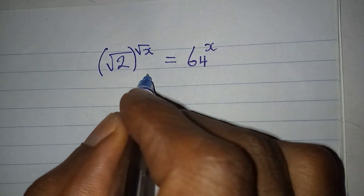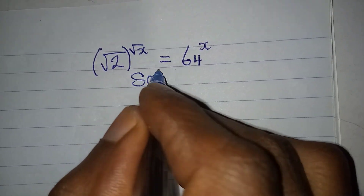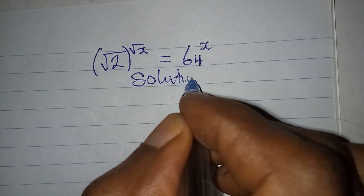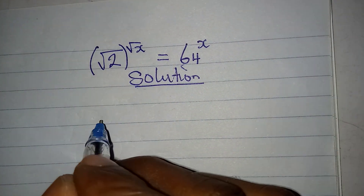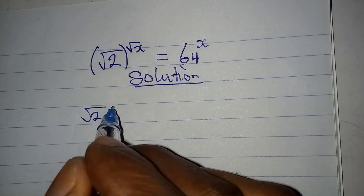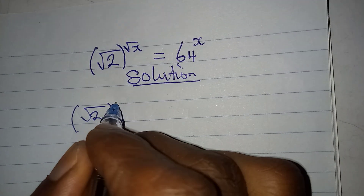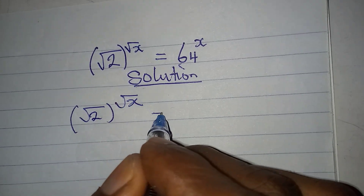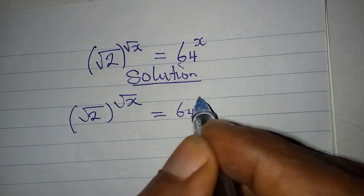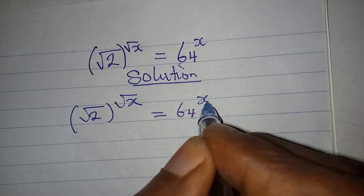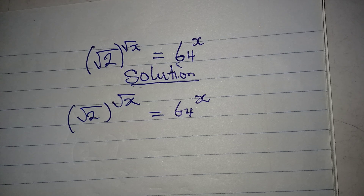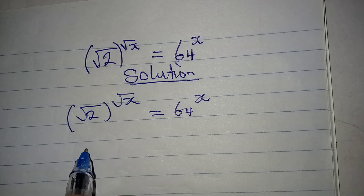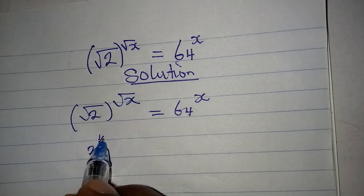Let's solve this problem quickly. We have the square root of 2 to the power of square root of x, equal to 64 to the power of x. Our target here is to make sure that we have the same base.